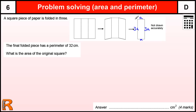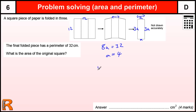So around the outside we have eight of those A's. So we've got eight times the length of this side, which is going to be equal to the perimeter of 32. So A equals four — that side length is four. And therefore the original square is three lots of four, which is twelve by twelve. And so we have twelve times twelve, which is a hundred and forty-four centimeters squared.